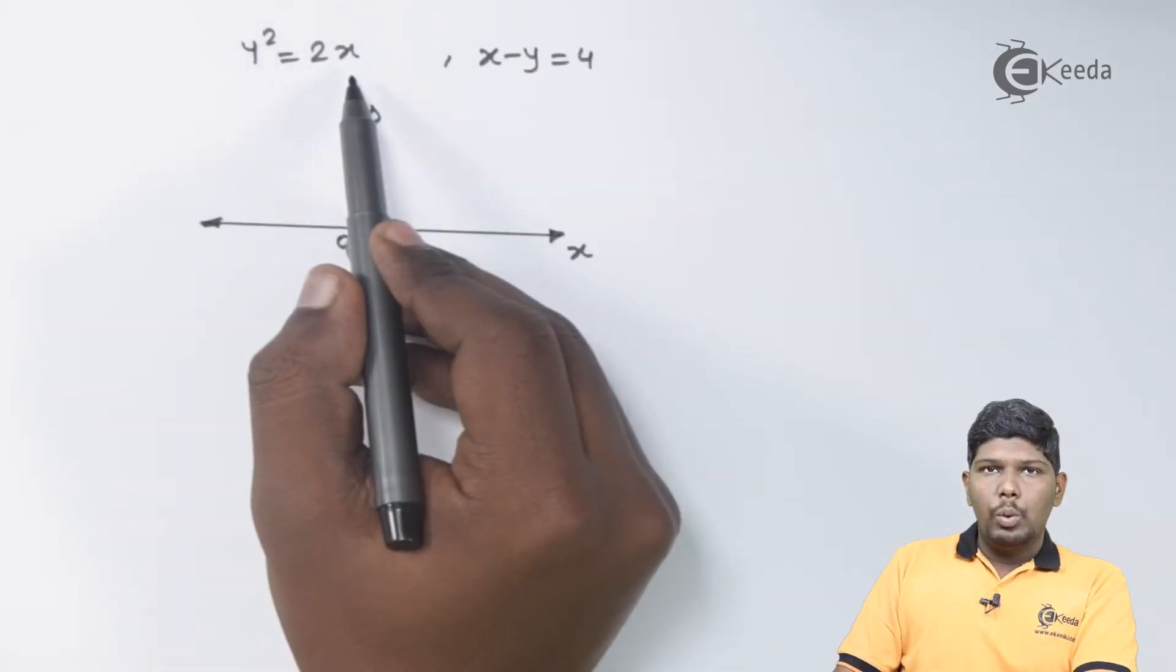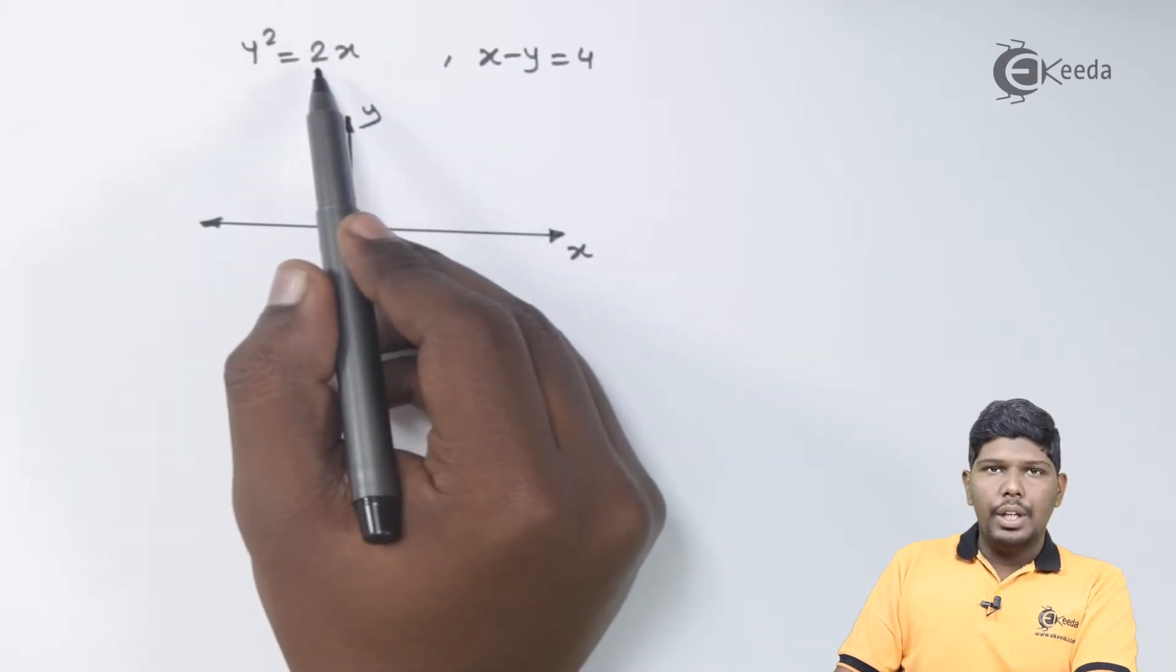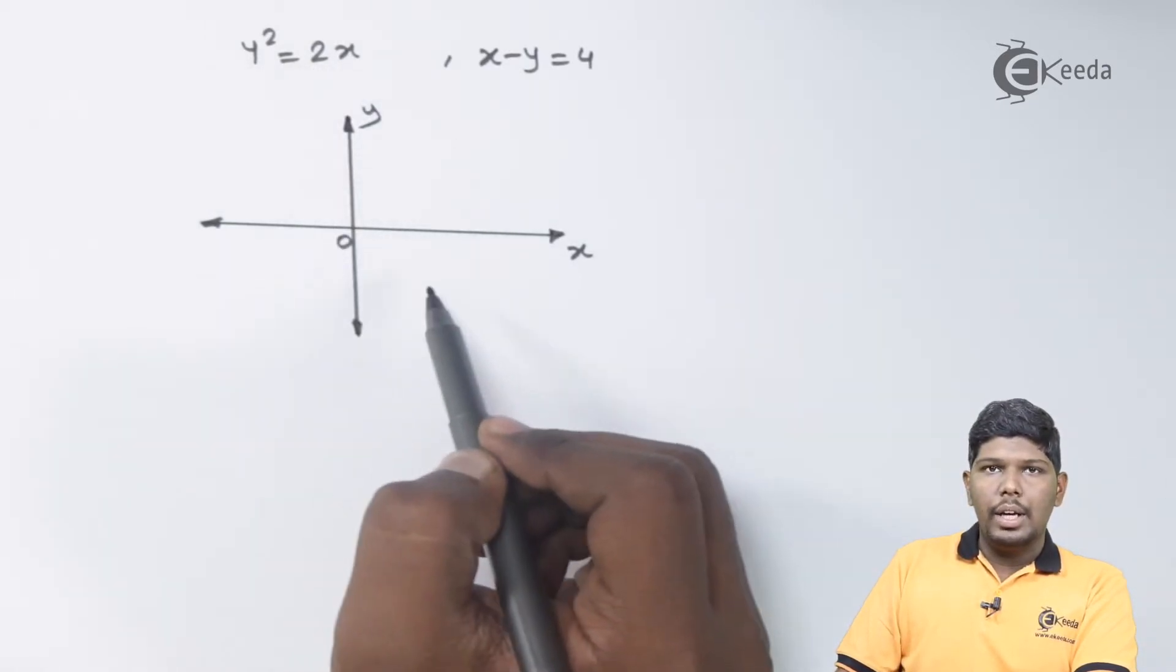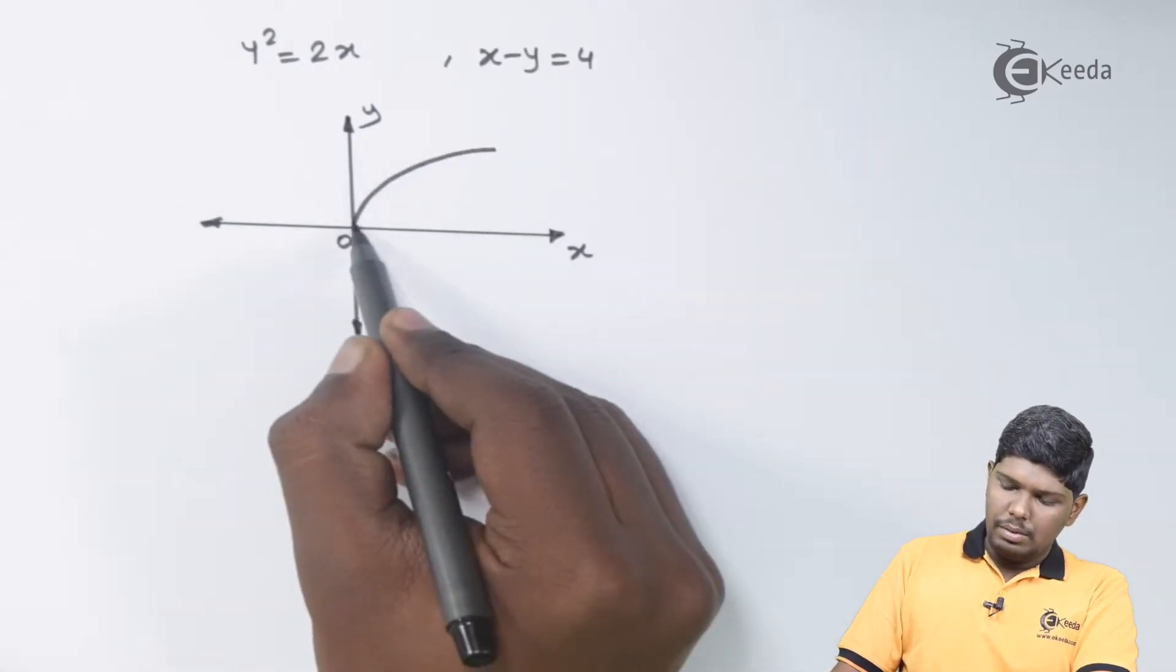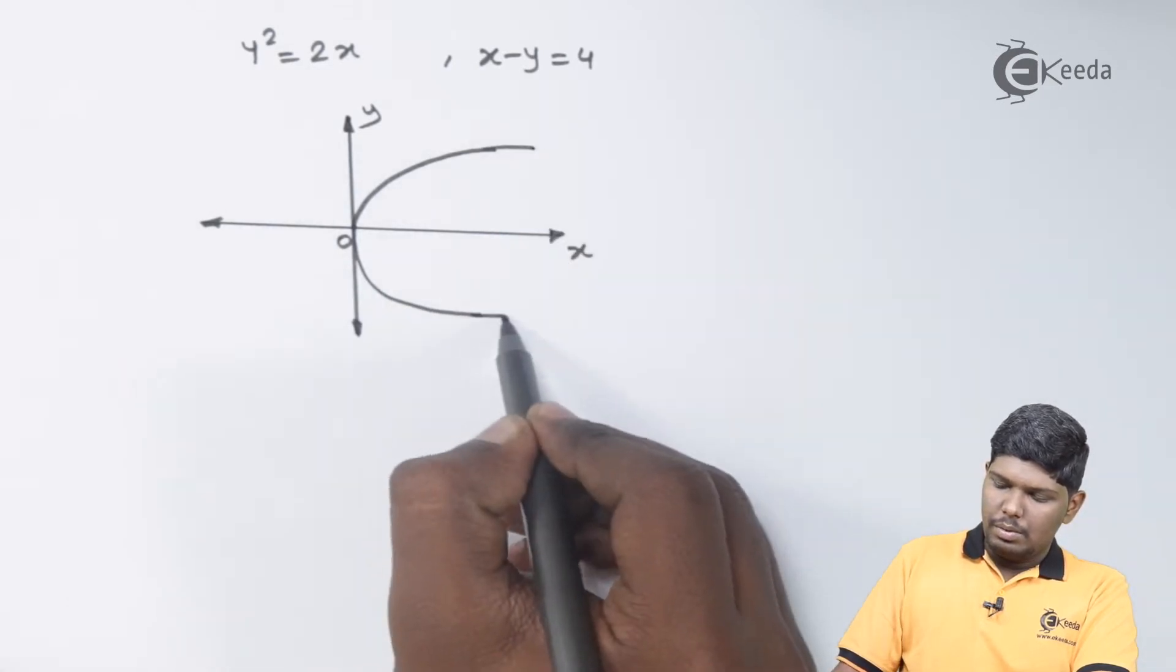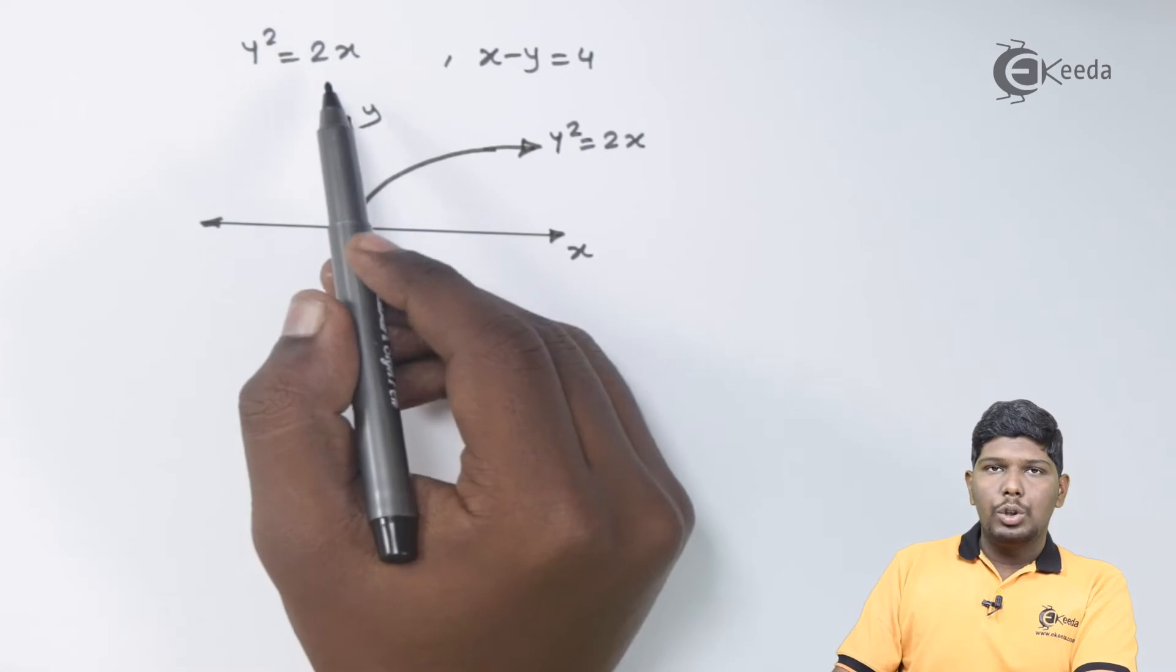y² = 2x. Since the power of x is less as compared to y and x being positive, it will be drawn in the positive x-axis direction.